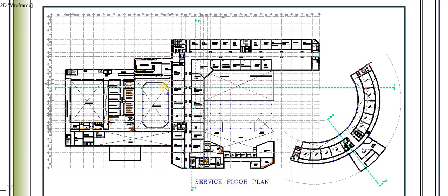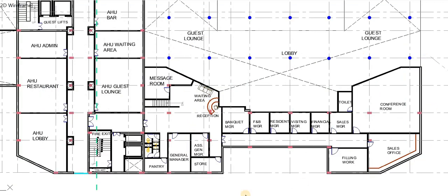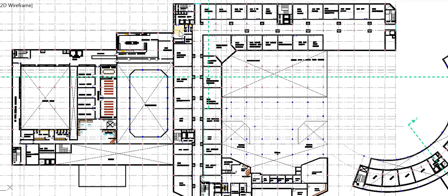In between the ground floor and the first floor there is a service floor plan which has all the back-of-house services. At the front is the admin area with spaces for all managers, including the general manager, assistant general manager, banquet manager, food and beverages manager, resident manager, visiting manager, financial manager, and sales manager.